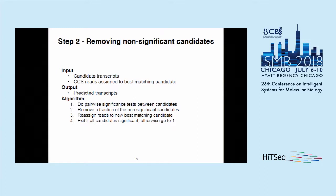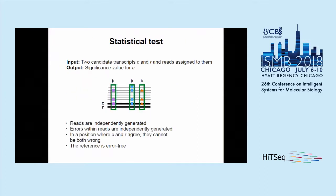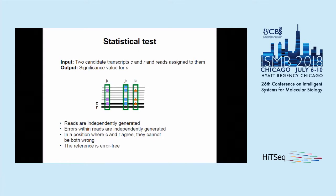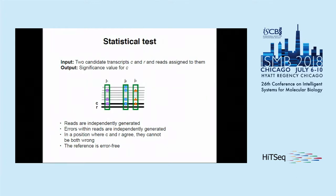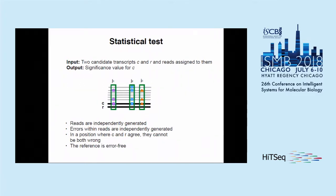The statistical test works as follows: given two candidate transcripts C and R, along with reads assigned to either one, the output is a significance value for C. We identify the positions that differ between the two candidates, referred to as variant positions. The assumptions are that reads are independently generated, errors within reads are independently generated, and in positions where the two candidates agree they cannot both be wrong. The reference R in this test is assumed to be error-free.